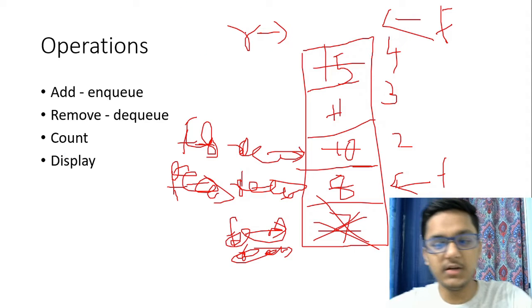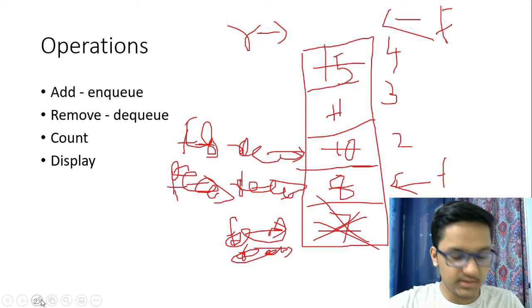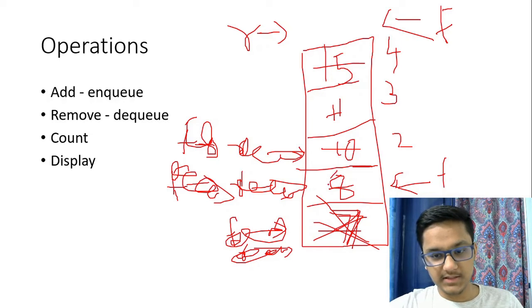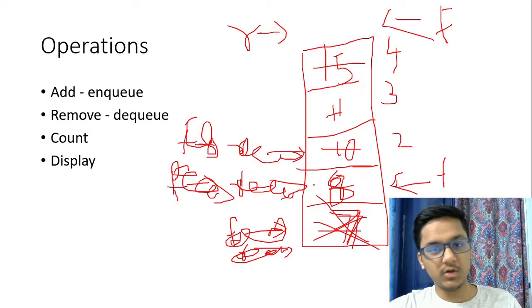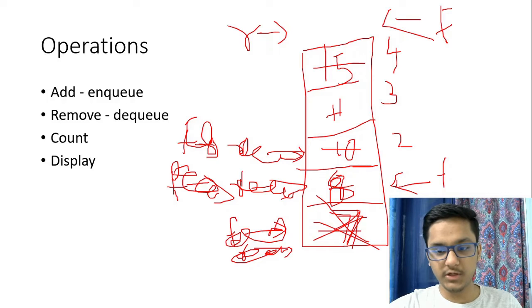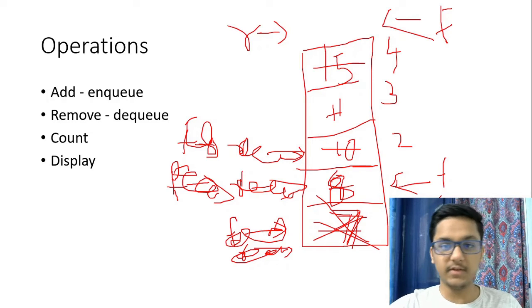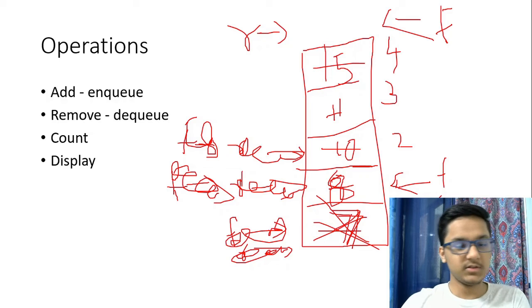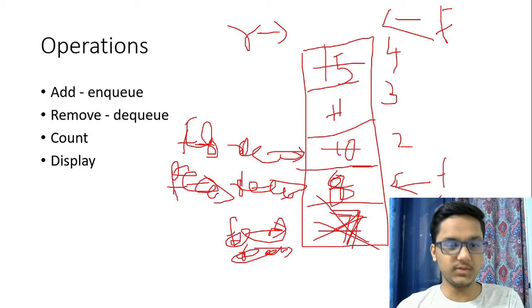The element you add first is the element you remove first. When the element seven was added first, and both seven and eight are in the queue, if I want to remove elements I have to remove seven first, because the front pointer is initially at zero. So seven was added first, and it's also removed first — first in, first out.